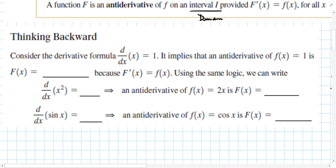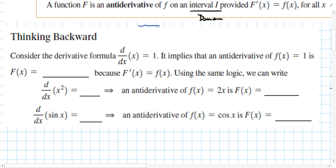What this antiderivative process does is make us think backwards. We have to work backwards through all the steps we go through to create a derivative, undoing them to find the antiderivative or the original function in the problem.